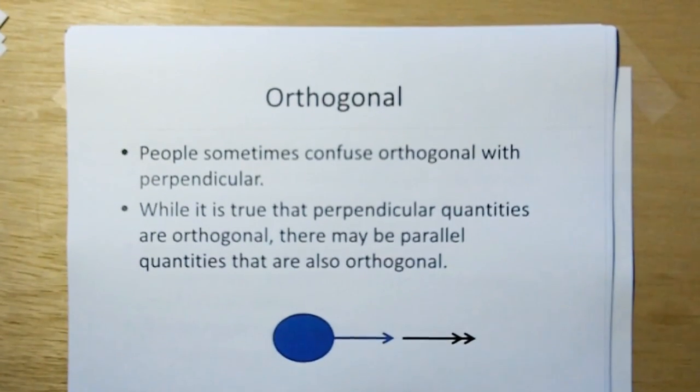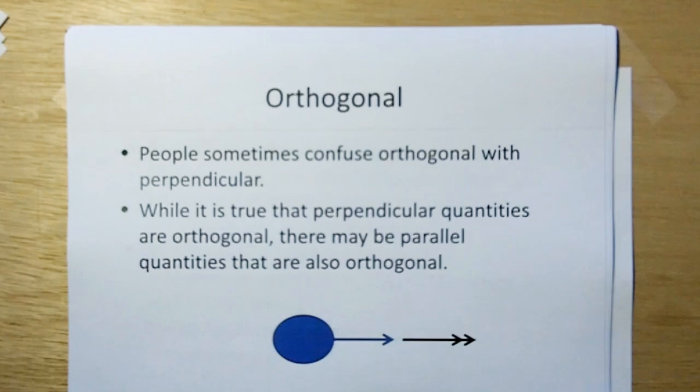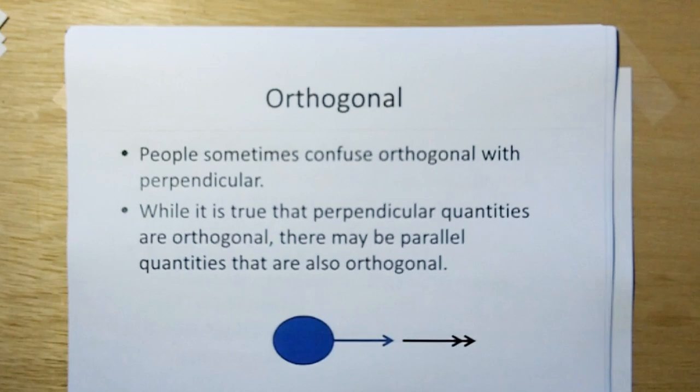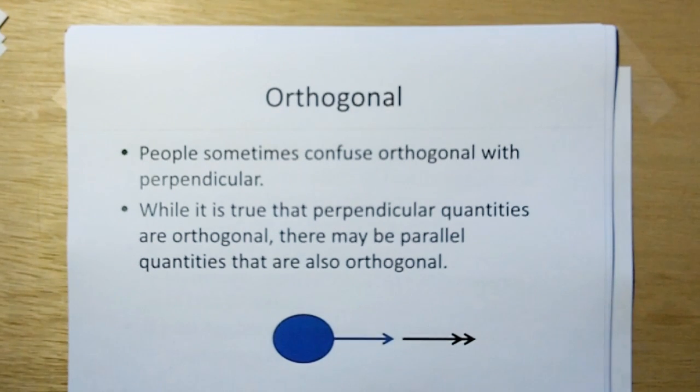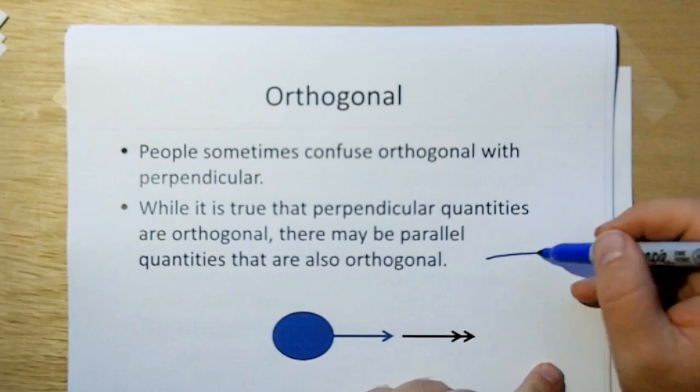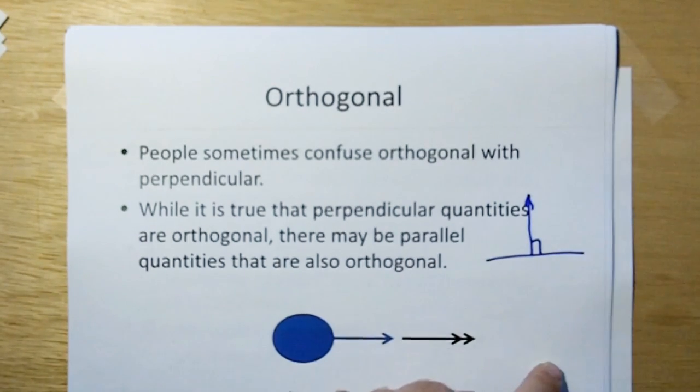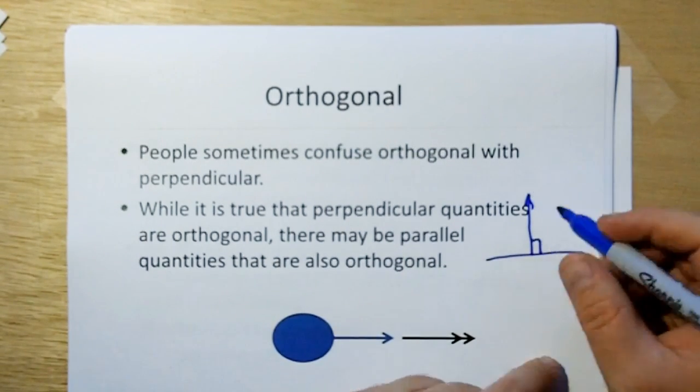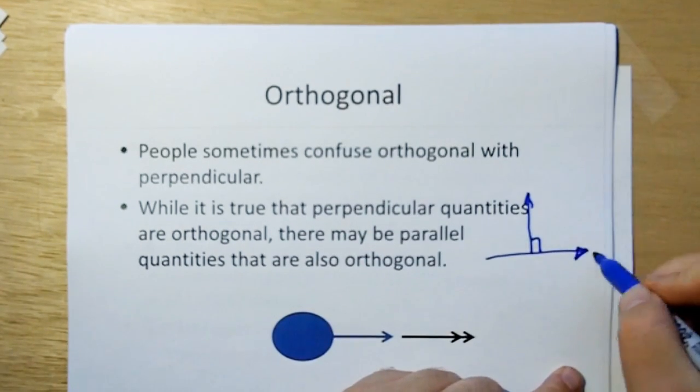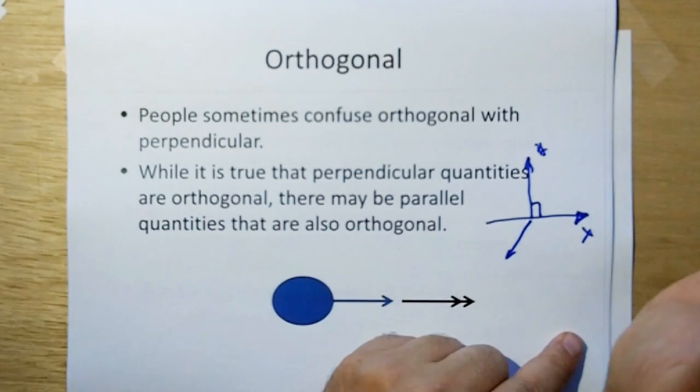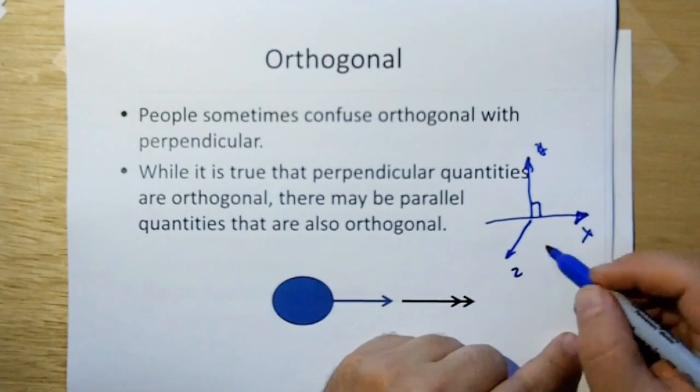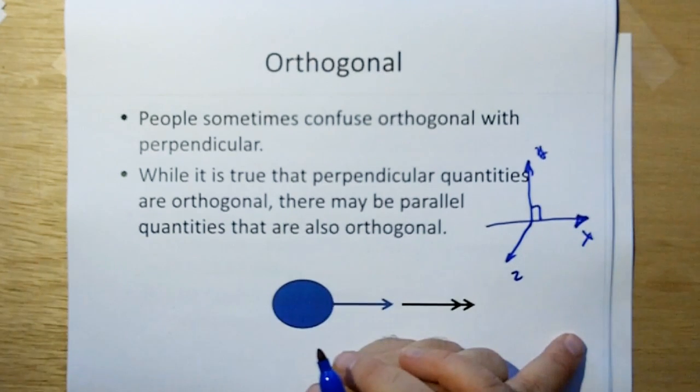Now orthogonal, that's a word that throws many people. People sometimes confuse orthogonal with perpendicular. Now while it's true that perpendicular quantities are orthogonal, there may be parallel quantities that are also orthogonal. What do I mean by perpendicular? When you have something, a line here and a line comes off at a 90-degree angle, we say that those are perpendicular. And that's why these coordinate systems work, because X and Y and Z come out in the other direction, and that would be a right-hand system. They are all perpendicular and therefore they're orthogonal.